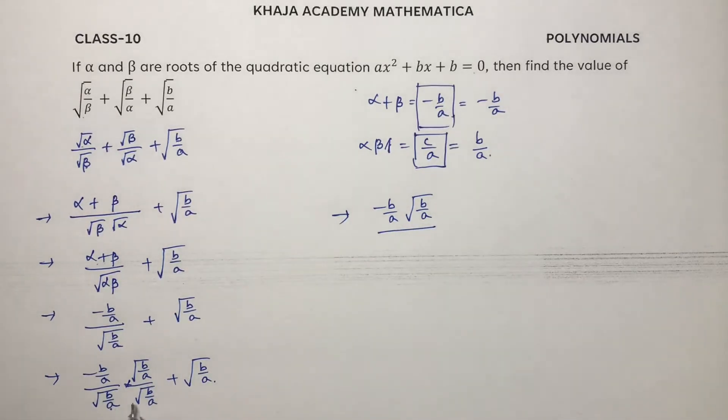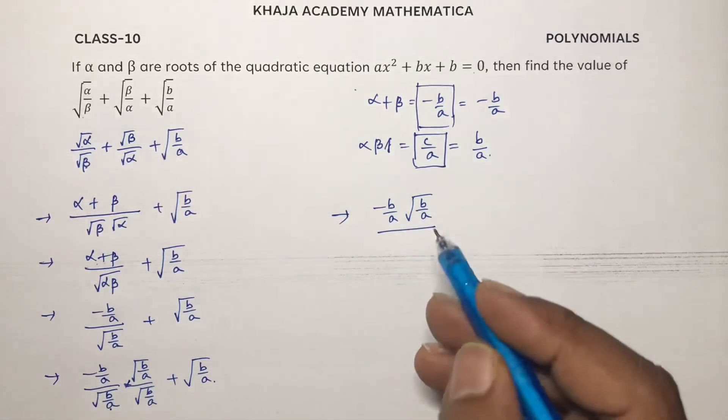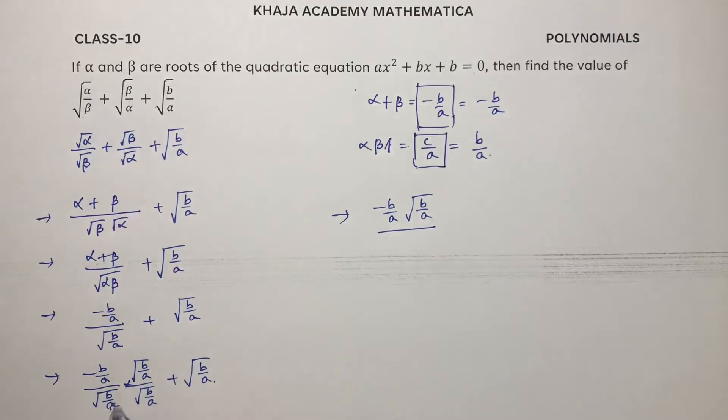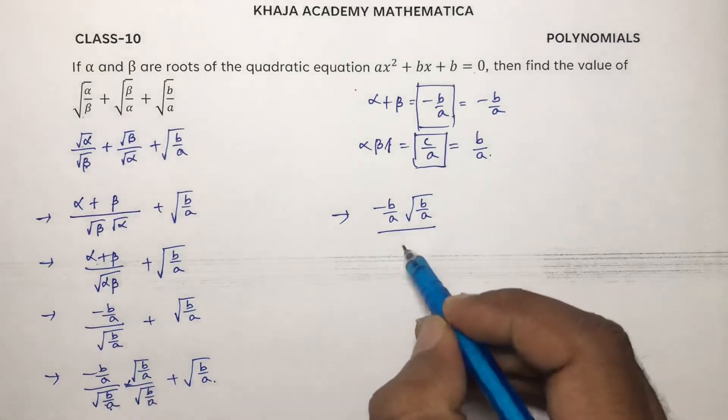Here root b by a into root b by a, like for example root 2 into root 2 we write just 2. So root b by a times root b by a, the square root cancels.